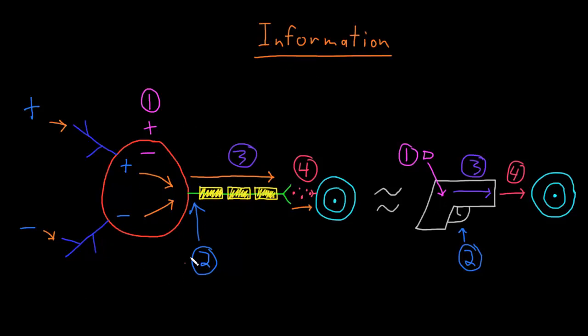This is the general way that neurons usually function, but there are multiple functional types of neurons. So let's take a look at some of those.